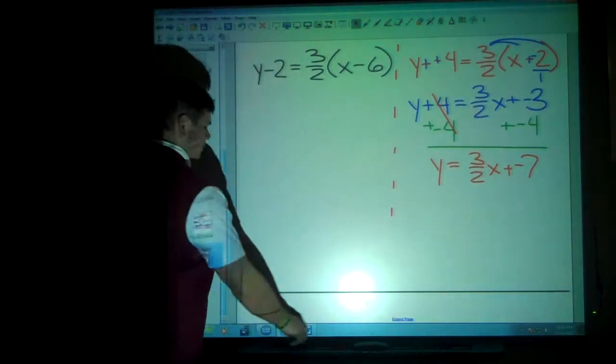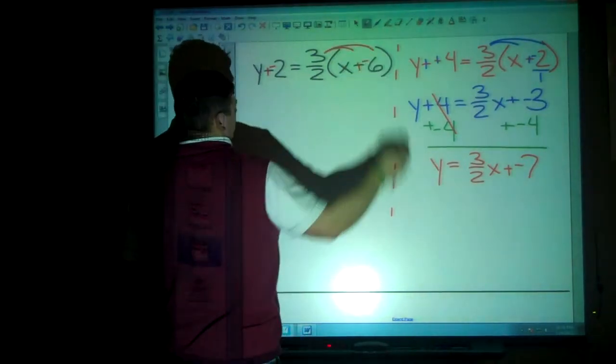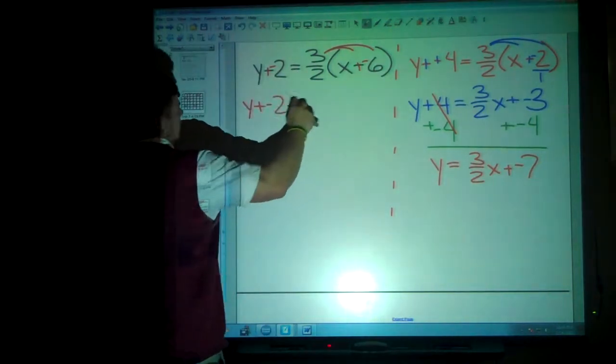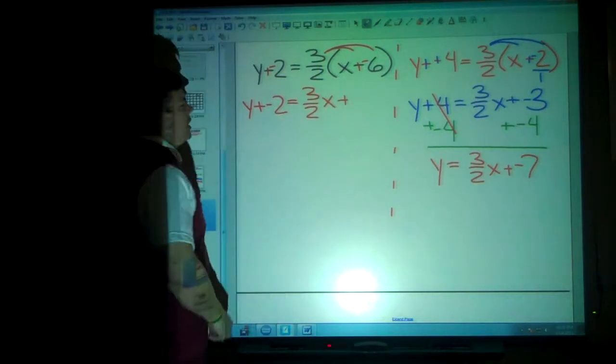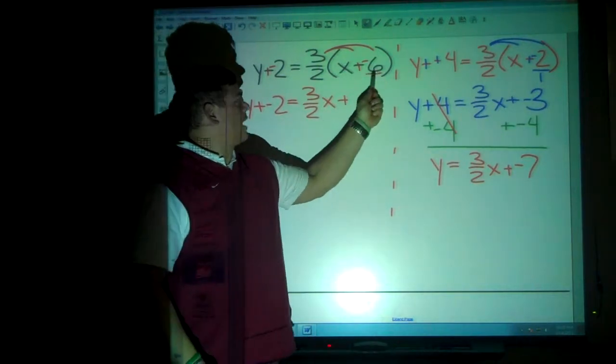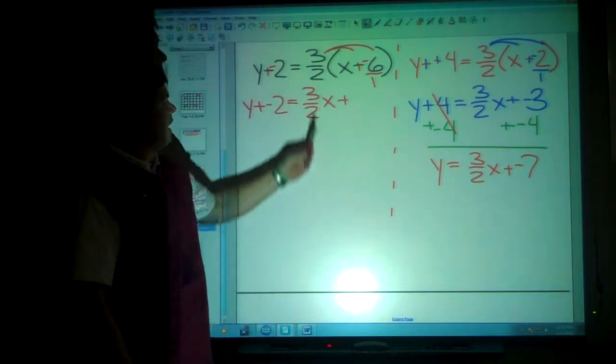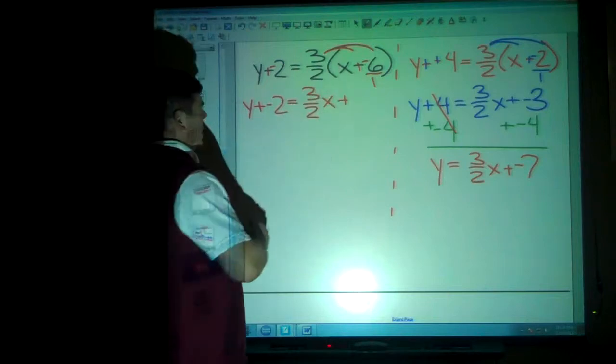All right, over here, we can change our sign to plus the opposite and use the distributive property. And that will give us y plus negative 2 is equal to the 3 over 2x plus... Now, again, if you want to write that as a fraction, then you have 3 over 2 times negative 6 over 1, and that 2 goes into the negative 6, negative 3, so 3 times negative 3 is negative 9.